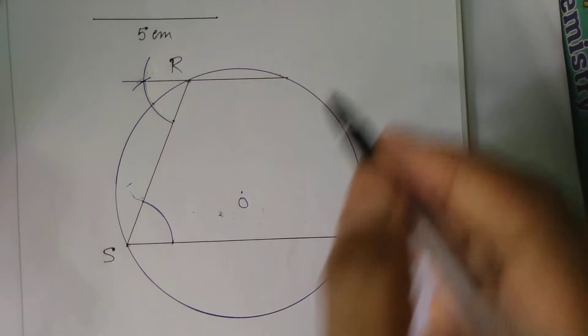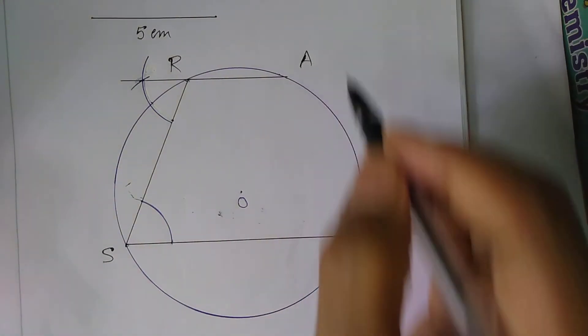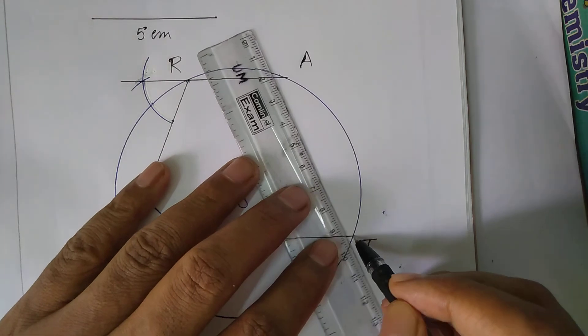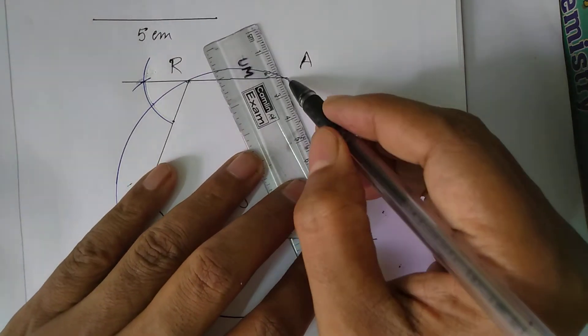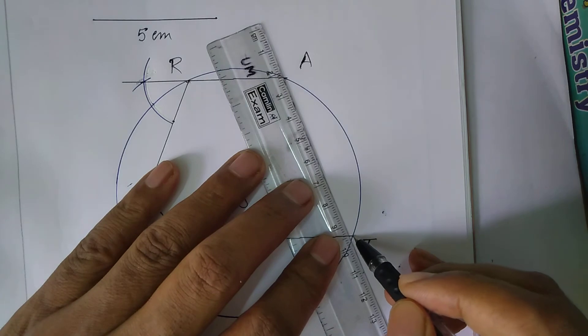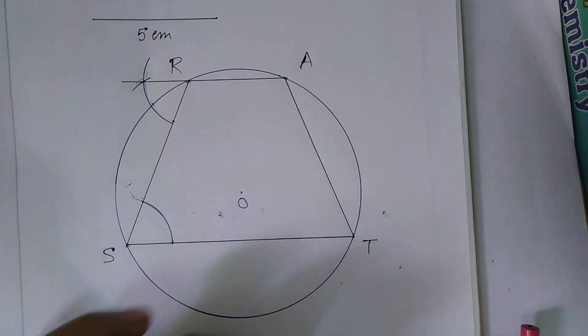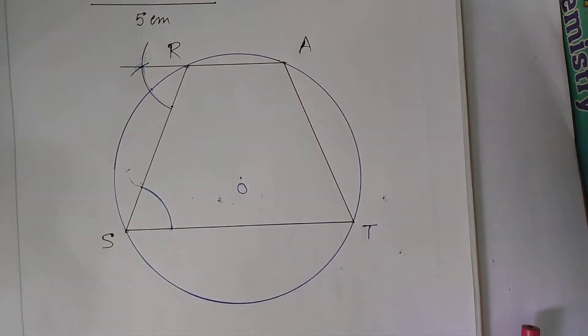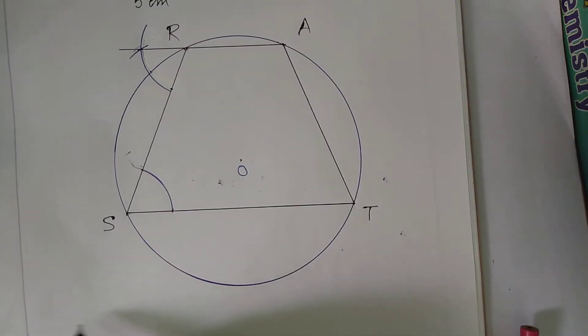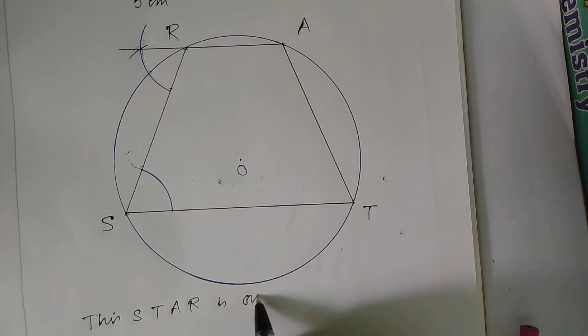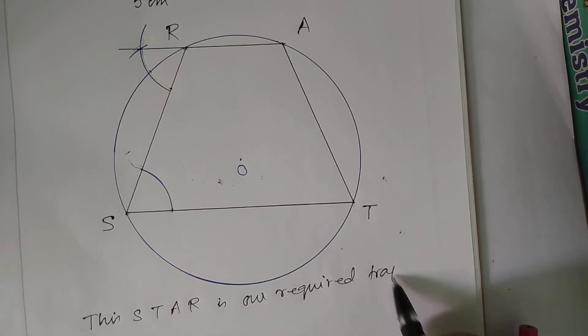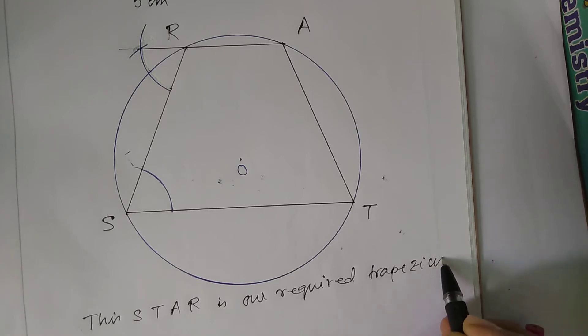We name this STAR. Now join TA. And this is our trapezium. This STAR is our required trapezium.